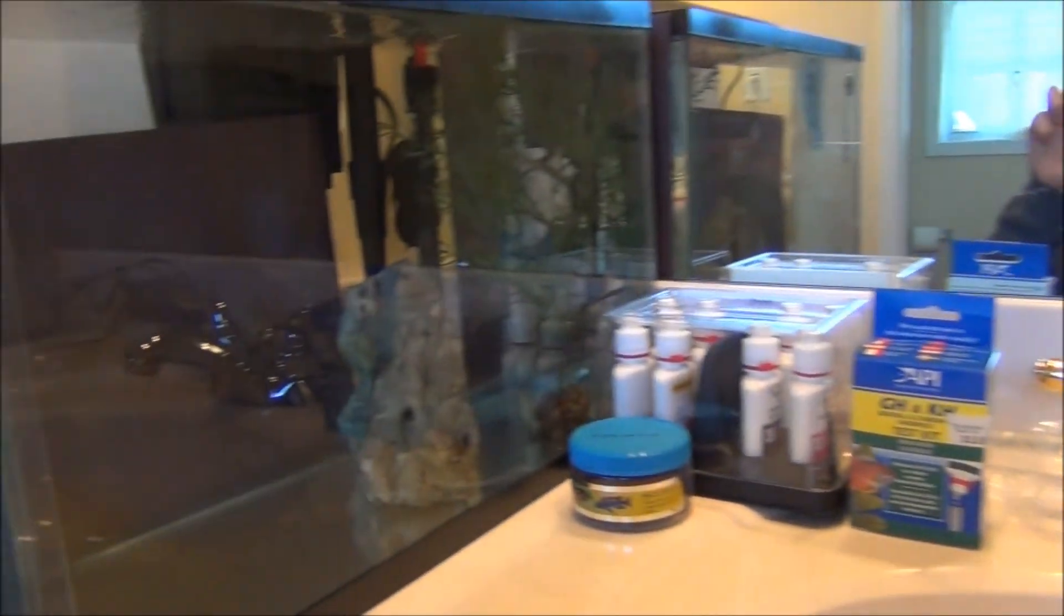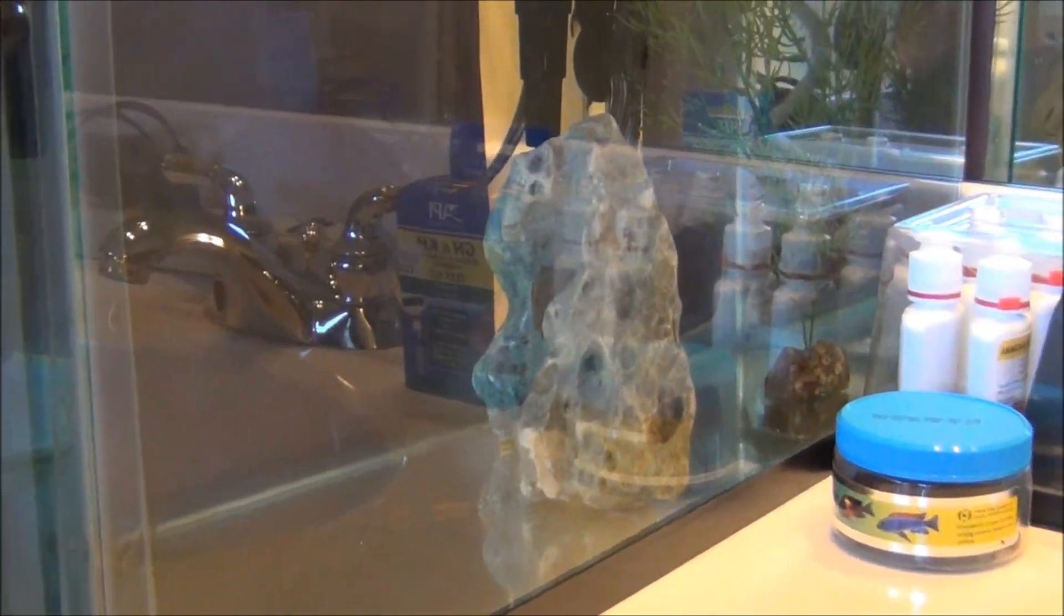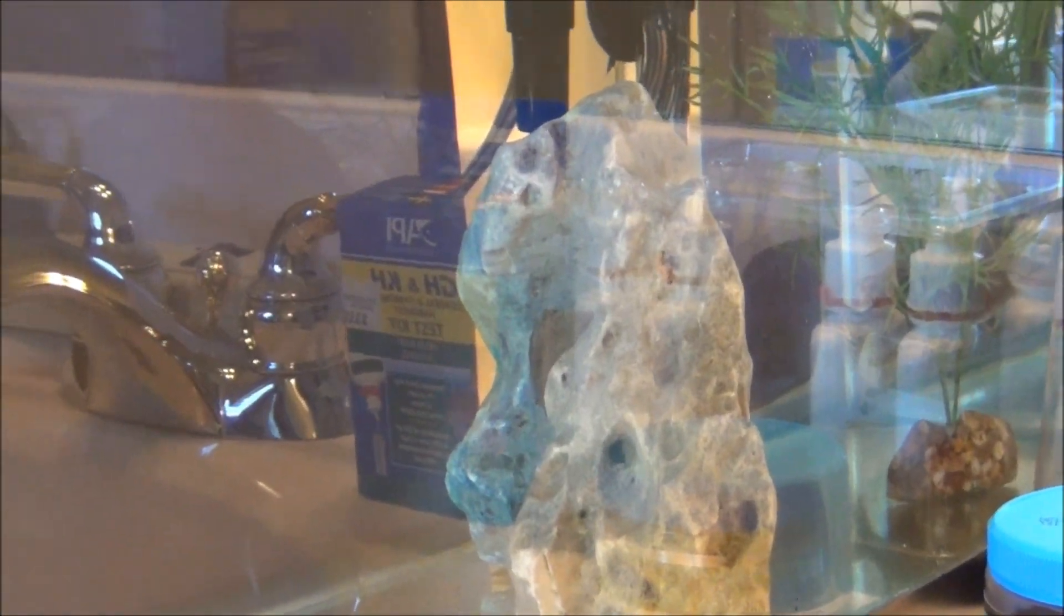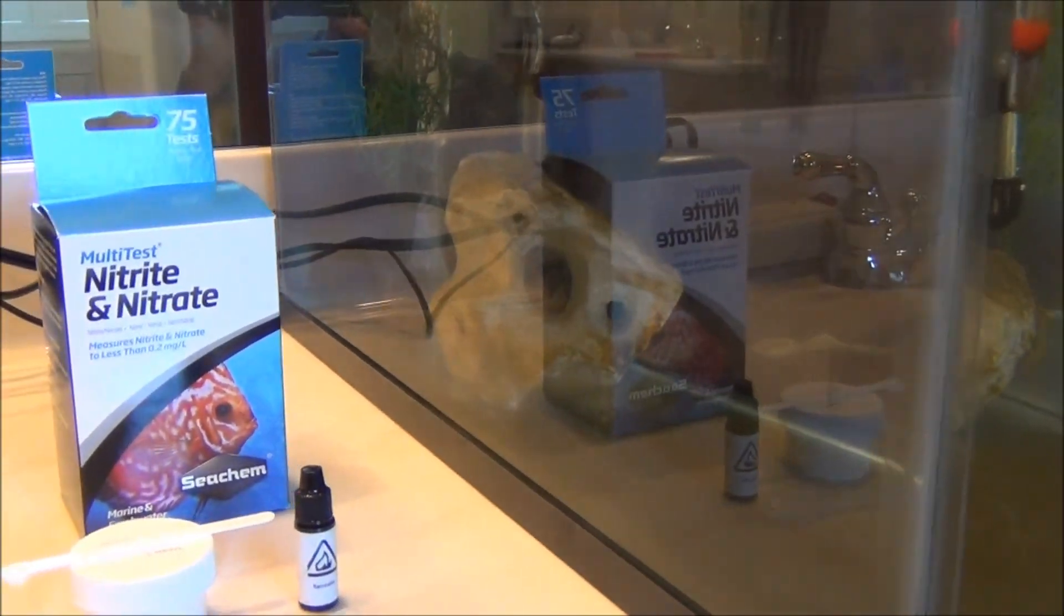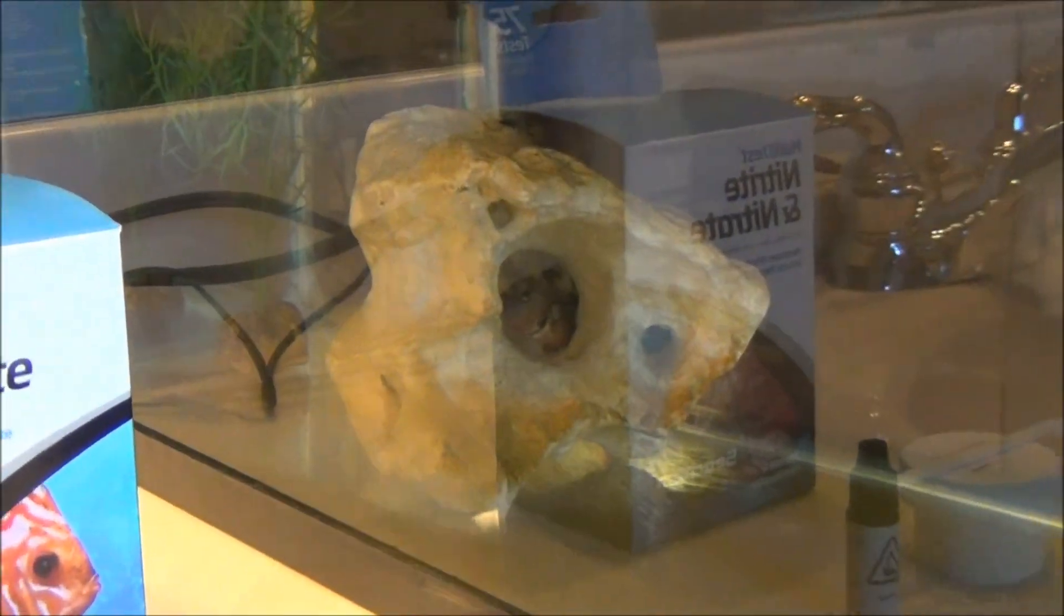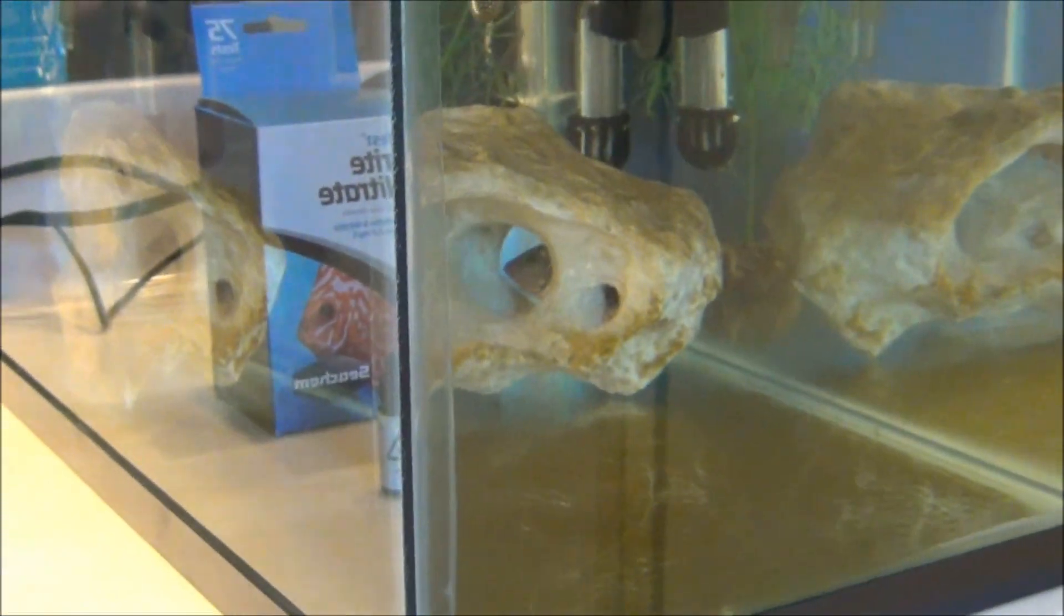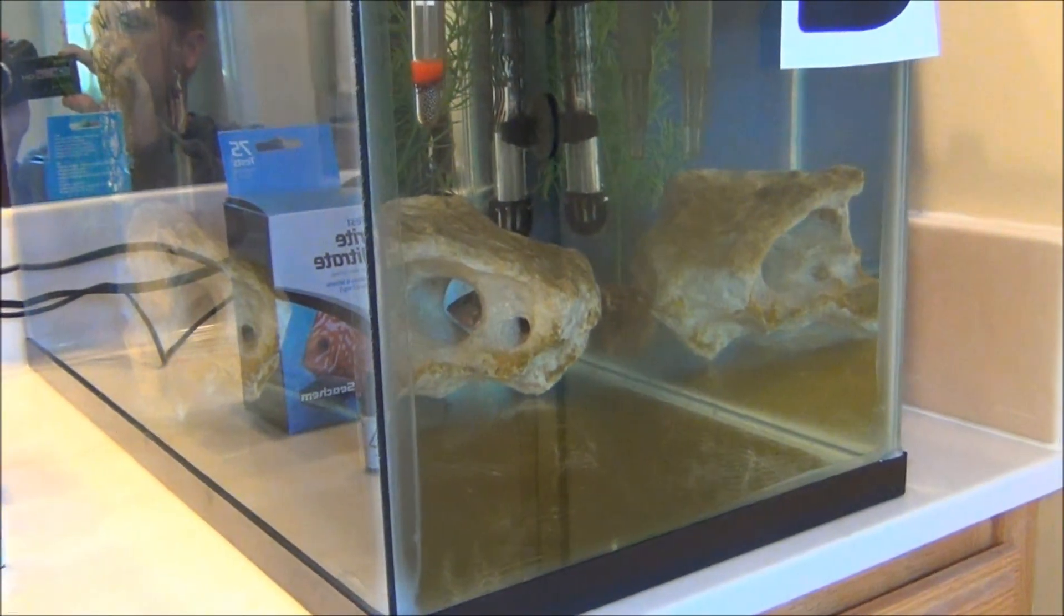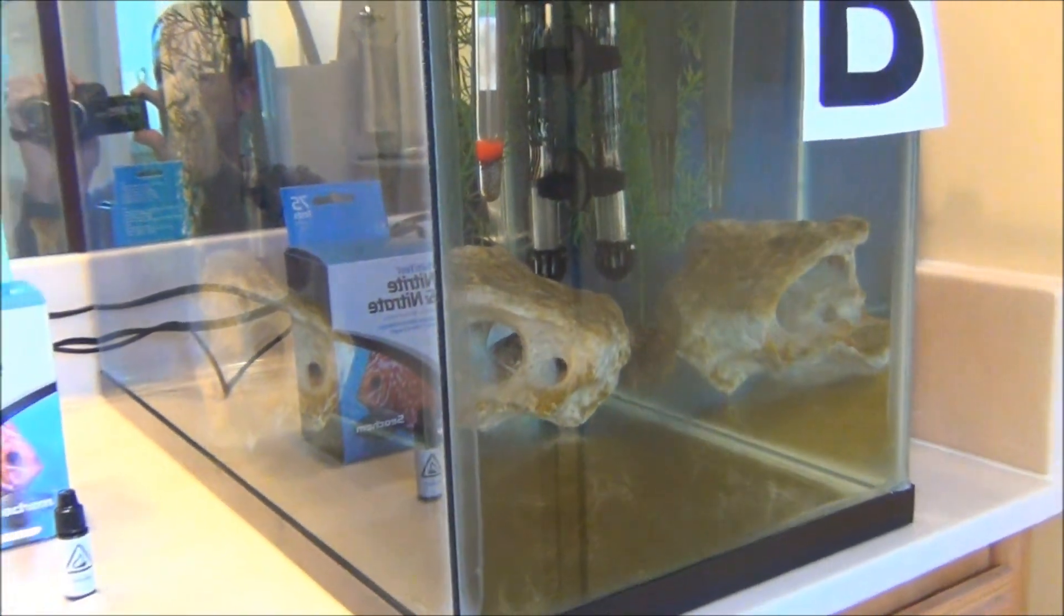Both aquariums have almost identical bio loads. Aquarium A has one Fusco Cichlid approximately 2.5 inches and approximately a 3-inch Bristlenose Plecostomus. Aquarium B has one 2.5-inch long Firemouth Cichlid and another 3-inch Bristlenose Plecostomus. This aquarium has a lot more diatoms because it just cycled on October 13th. Both aquariums are set up identical.